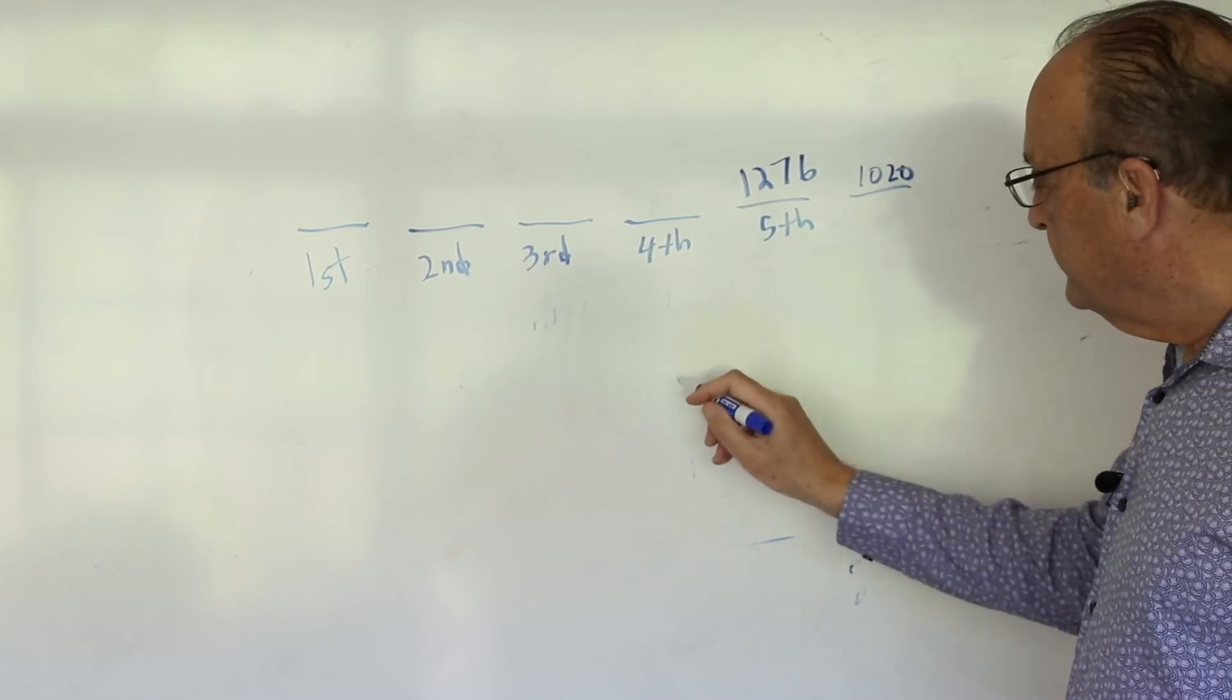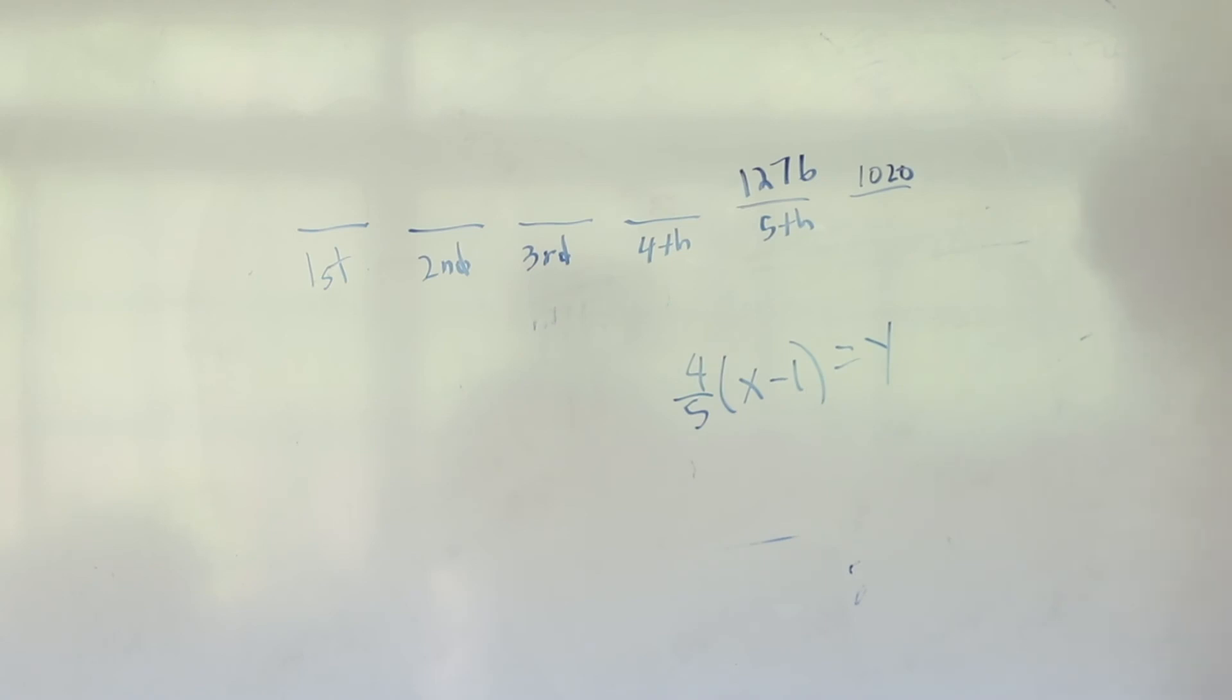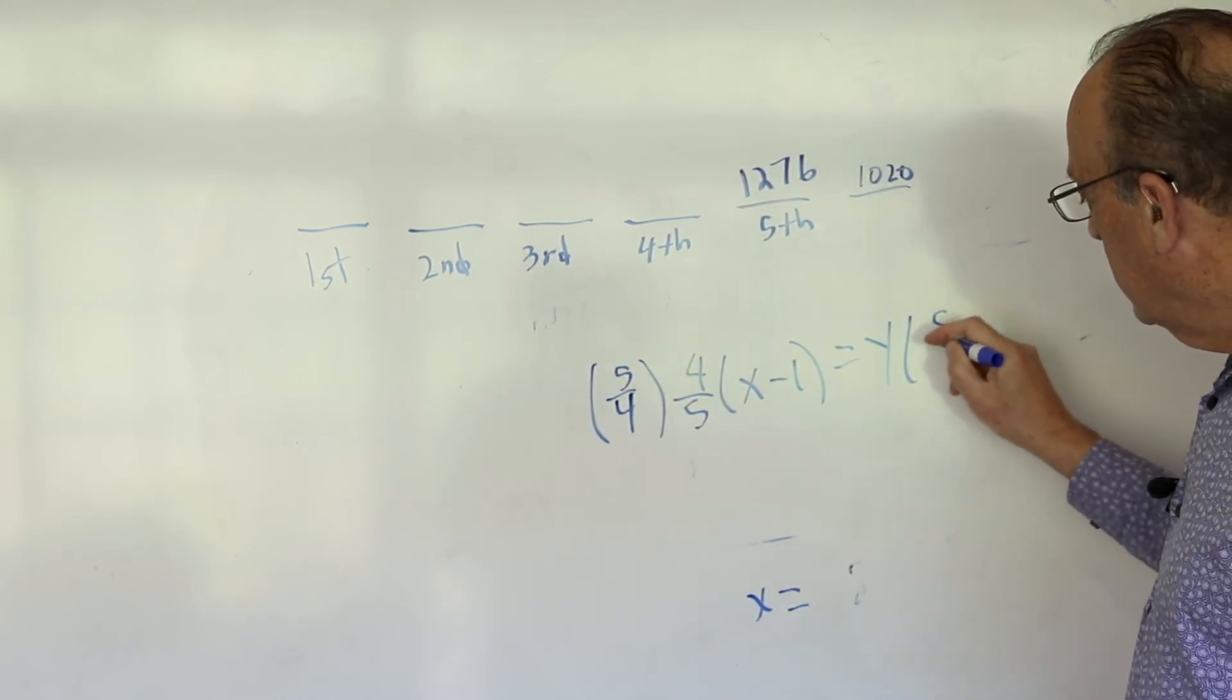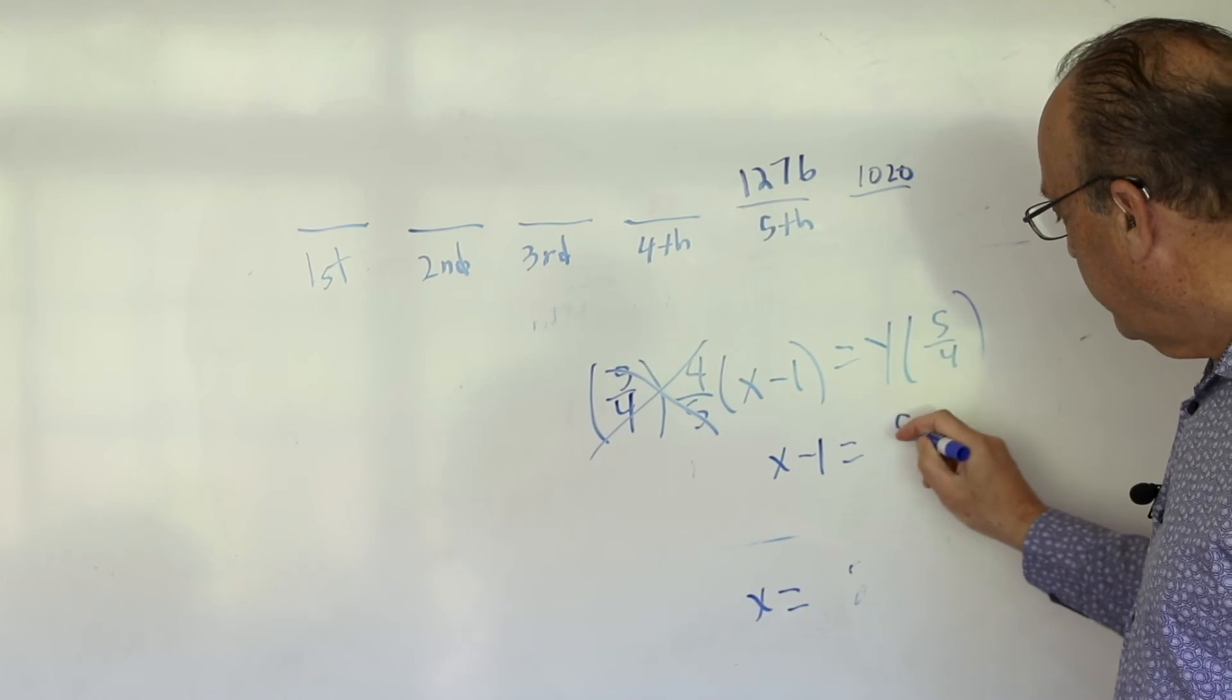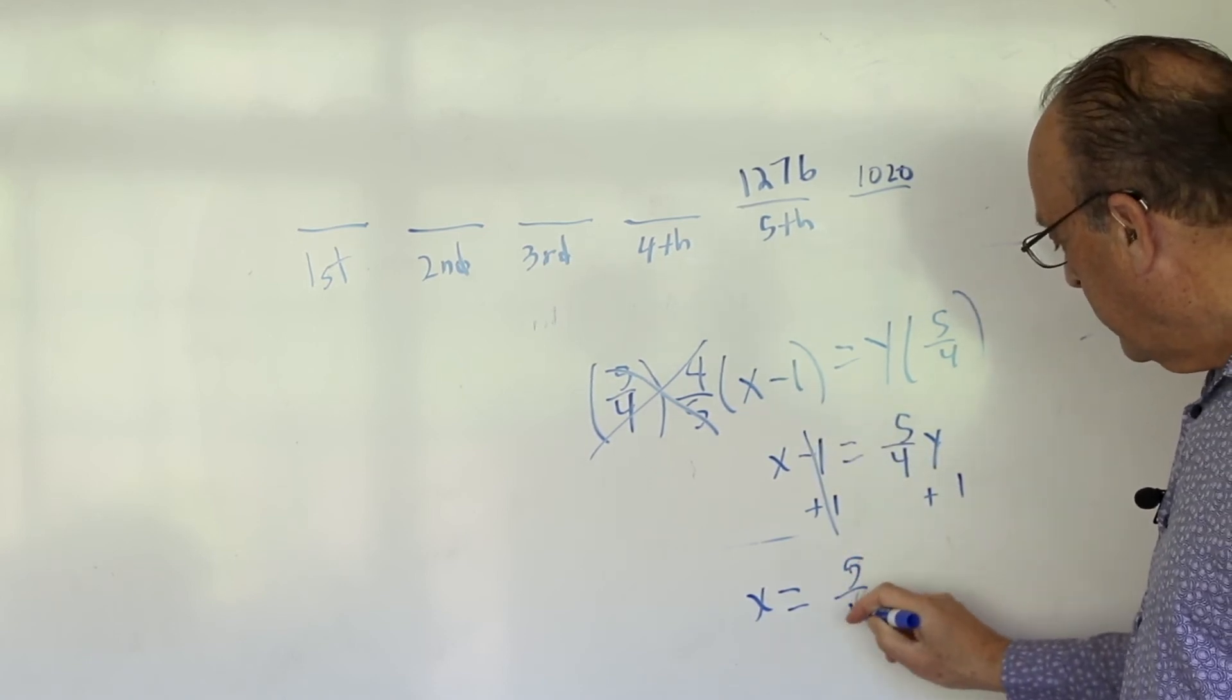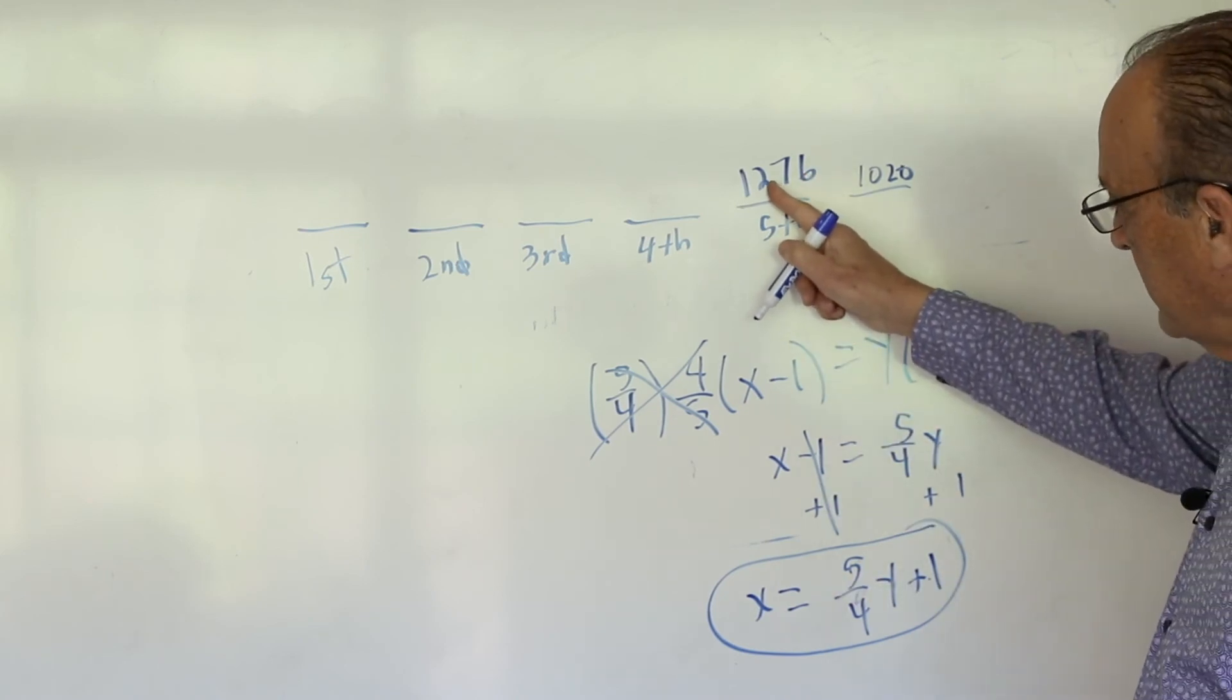So if we have 4 fifths of x minus 1 equaling y, now we have to solve this for x. So we want to find what x is equal to. So let's multiply both sides by 5 fourths. So this all cancels. So we get x minus 1 equals 5 fourths y. And add 1 to both sides. And that cancels. So x equals 5 fourths y plus 1. So we just have to do the algebra. So times this by 5 fourths and add 1 to get this.